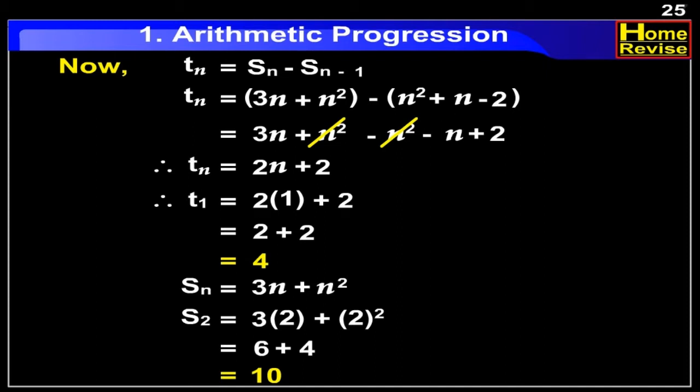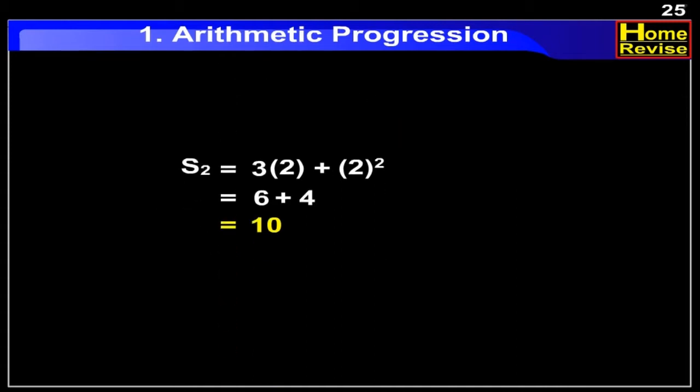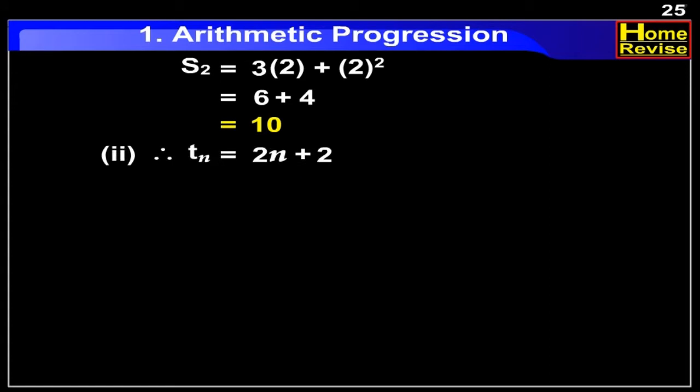Now, to find the 2nd, 3rd, and 15th term, consider Tn is equal to 2n plus 2. Therefore, T2 is equal to 2 into 2 plus 2, which is equal to 4 plus 2, equal to 6.